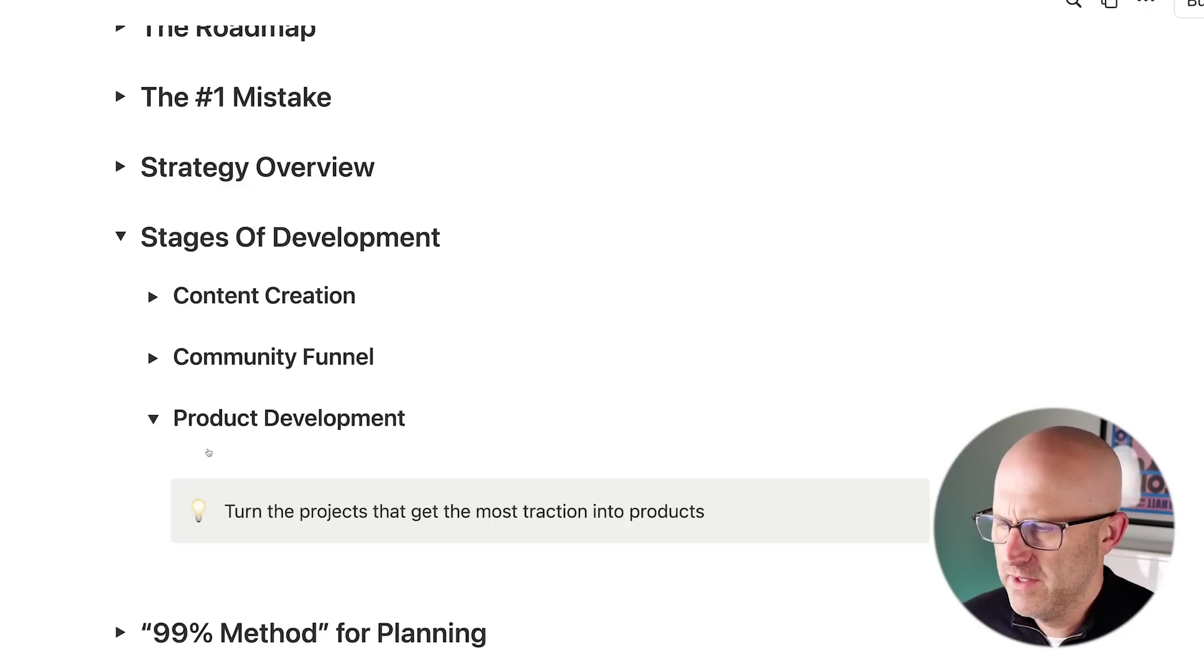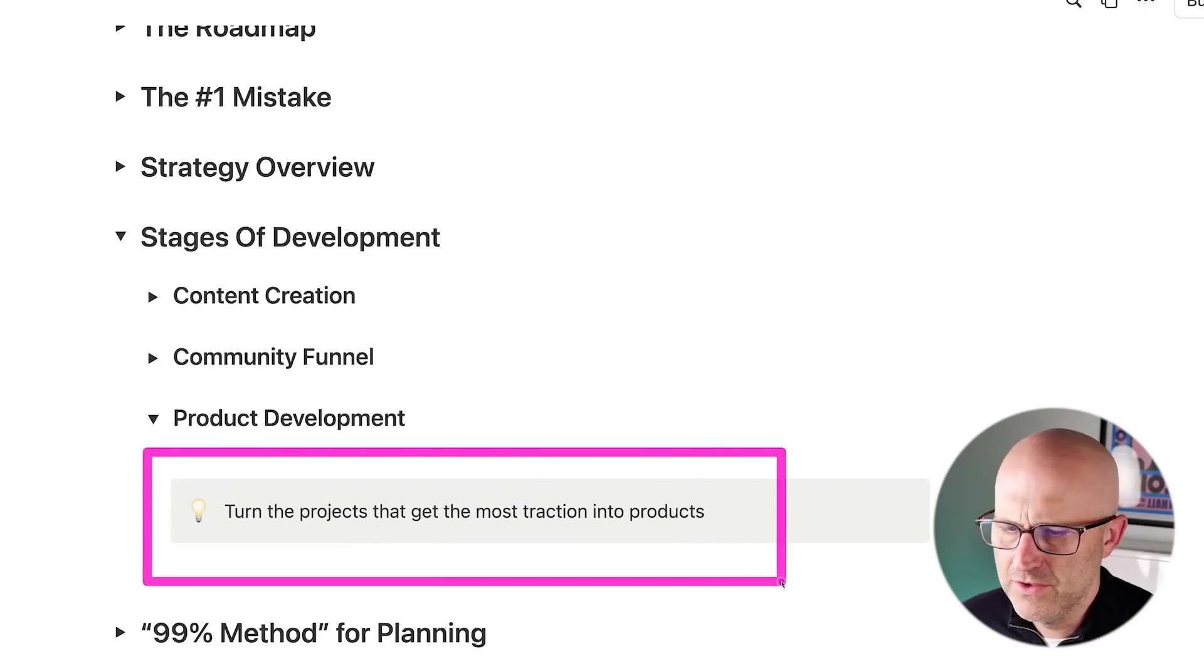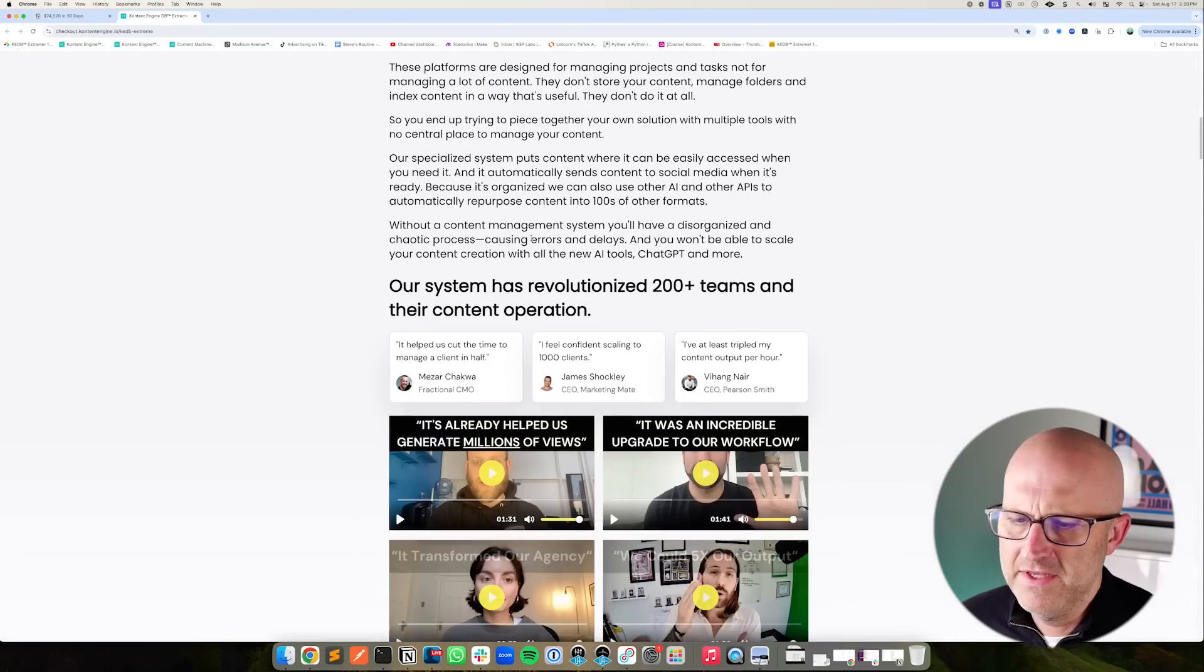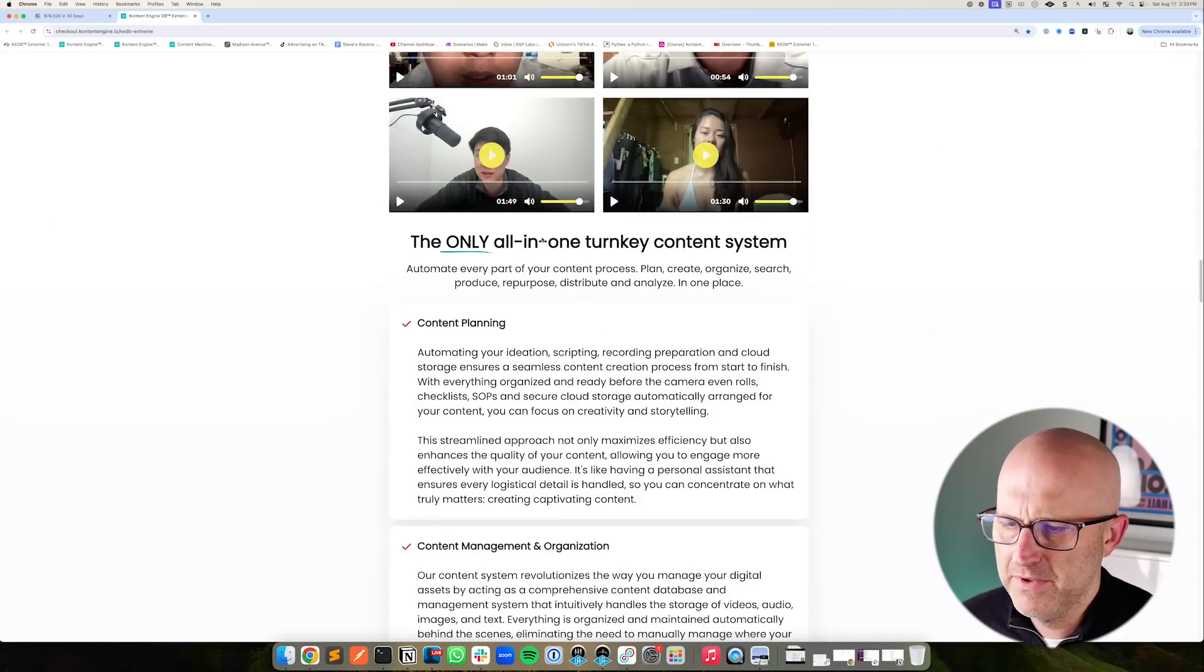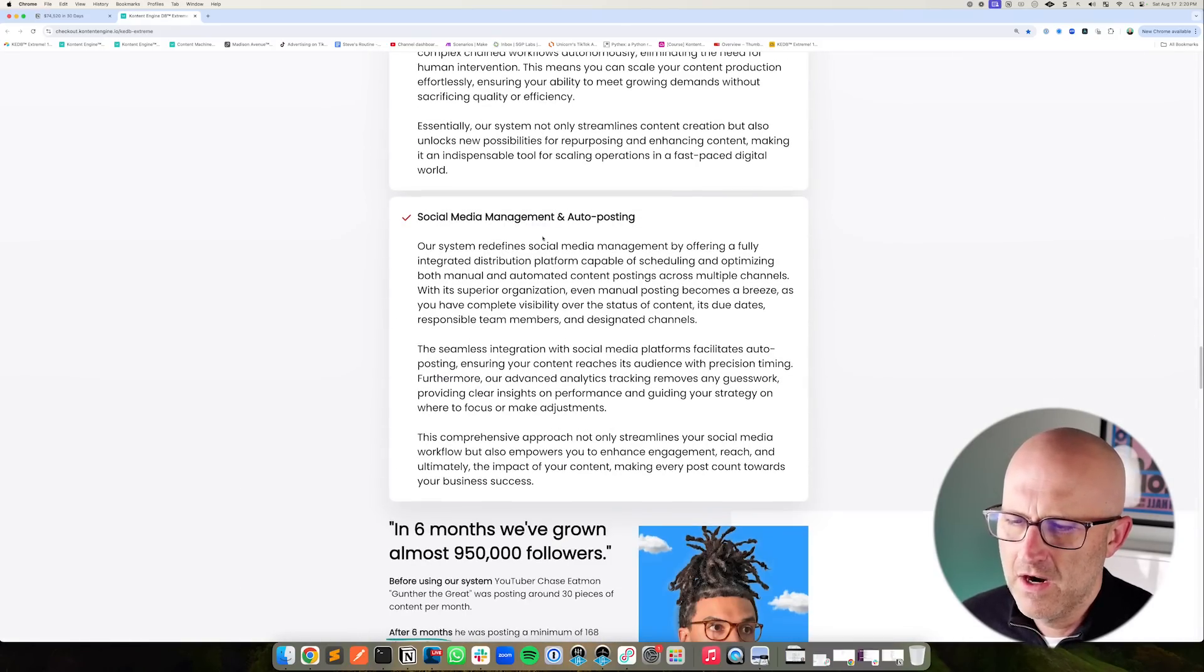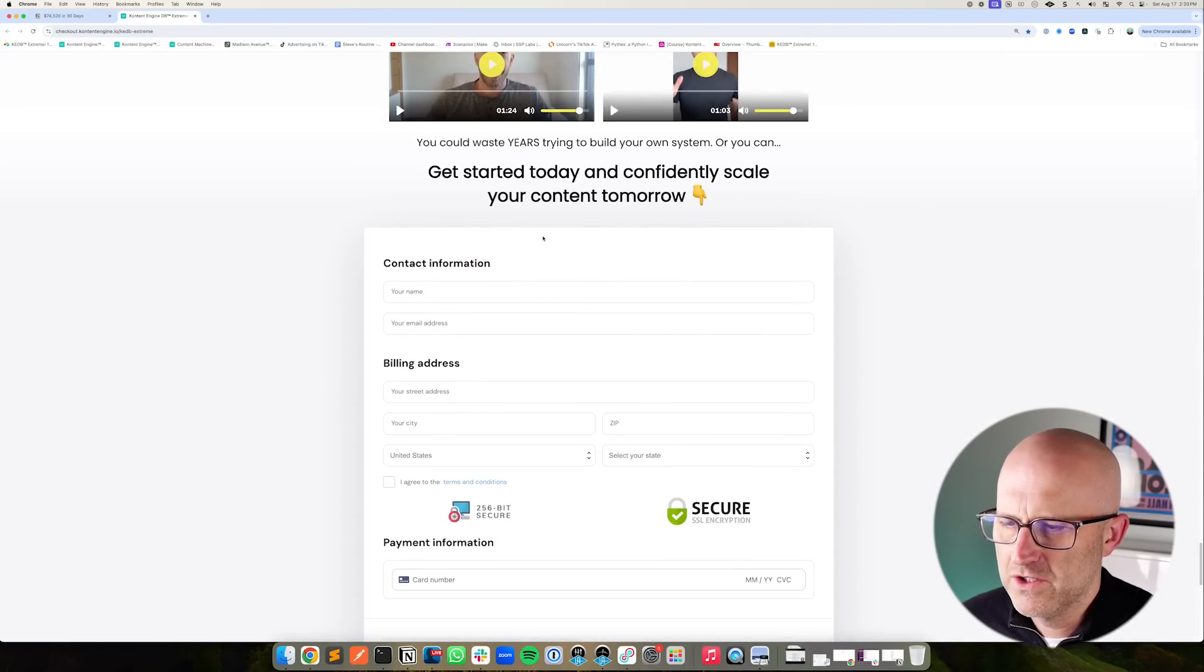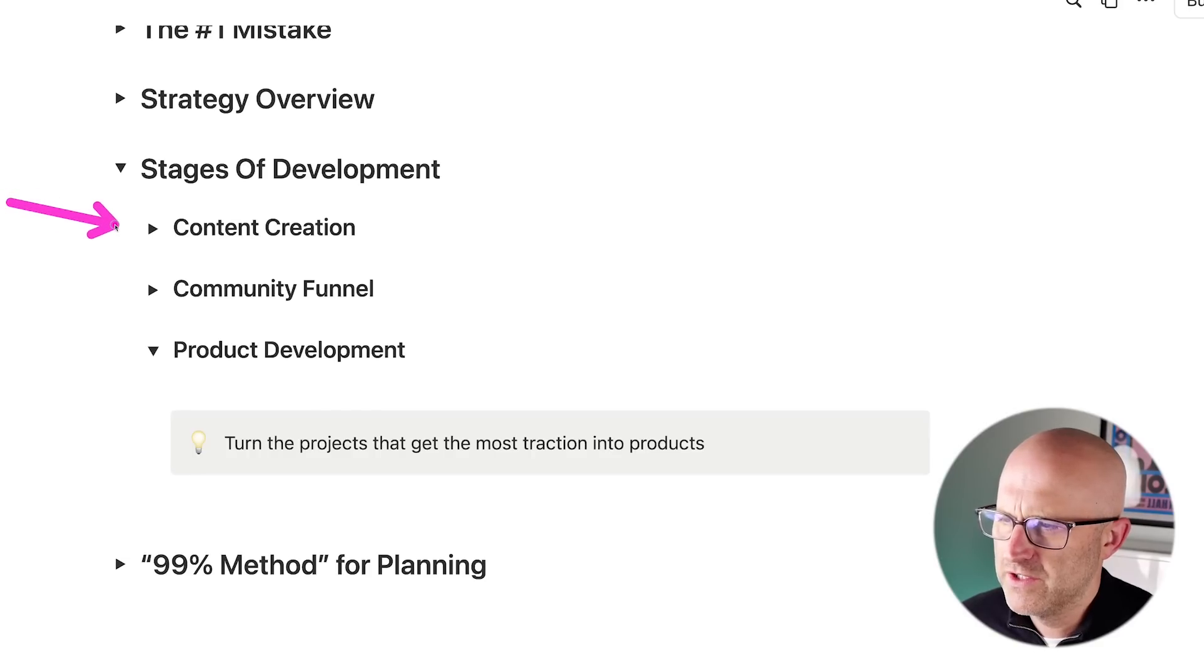So now when it comes to product development, again, just like we turned our video projects into freebies to pull people into our community, we're also going to turn those best performing projects into products. So I'm currently selling an AI automation product called the content engine database. And this entire product was developed by simply creating TikToks around topics that interest me, around automations that I thought were interesting, and then using the feedback that I got on TikTok to actually generate the product. So our content creation is going to be a place where we can experiment, build out projects. The best content will go into our community to draw in new members, and then we'll look for that single best idea to turn into our product.